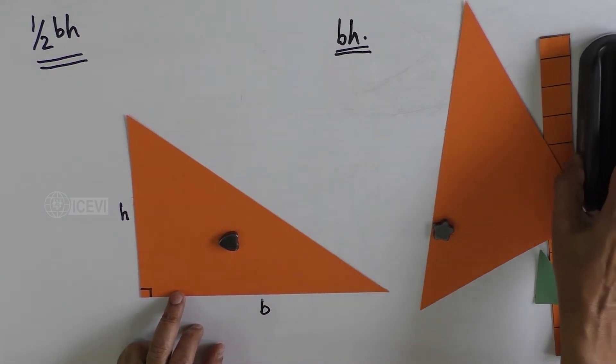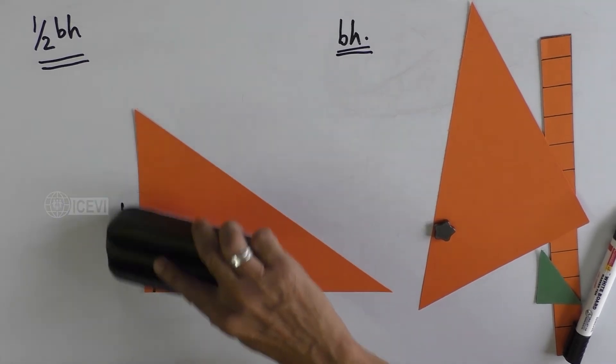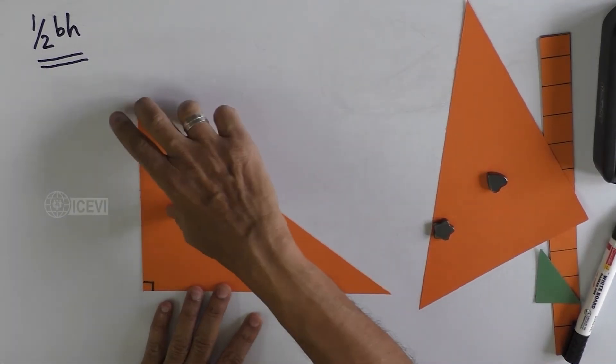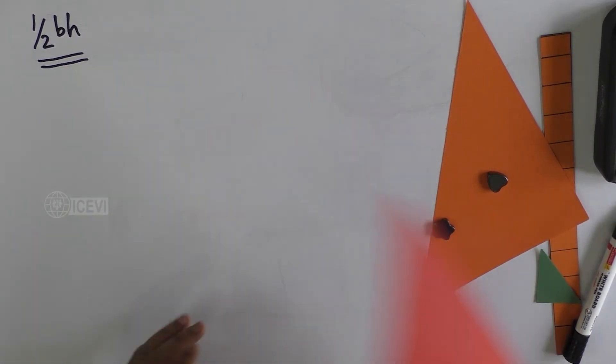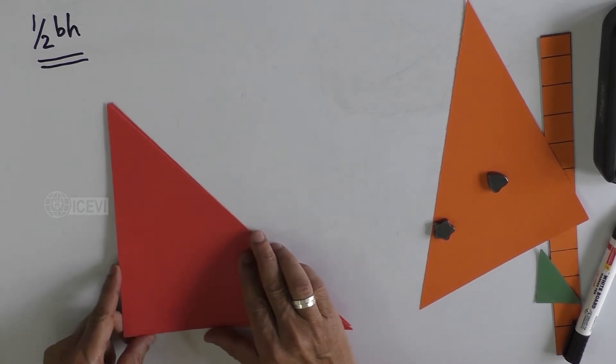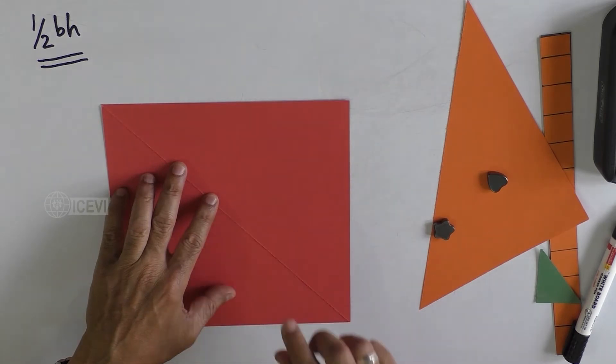This is in the case of a rectangle. The principles are the same. Let us take a square. The square is made into two triangles.